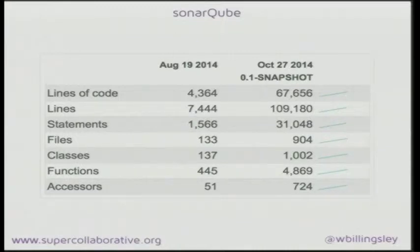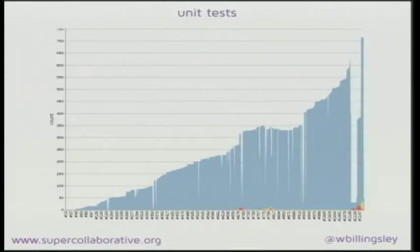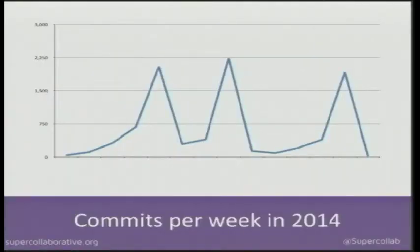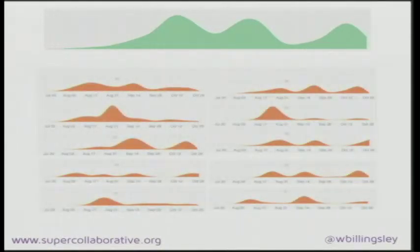Sonar Cube came up with various statistics. Lines of code: by week three there were already 4,000 lines of mostly student code; by end of semester they'd written 67,000. Test coverage was around 22%, with unit tests growing from 15 up to 574. But what we care most about is the quality of the student experience — what they've been through and that they've learned — rather than whether the product looks beautiful. Individual students have quite different commit patterns, but when you combine them all the commit graph ends up looking quite regular.